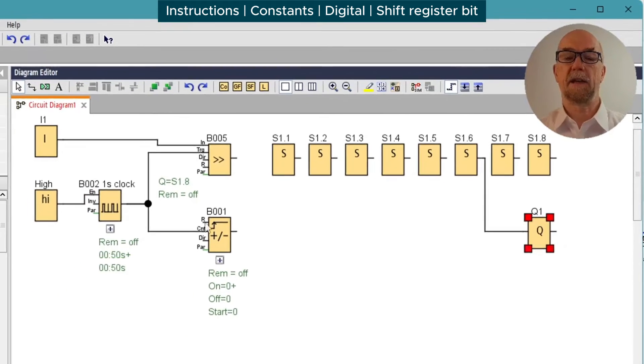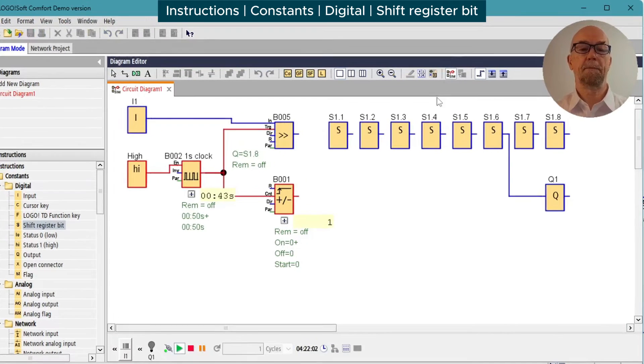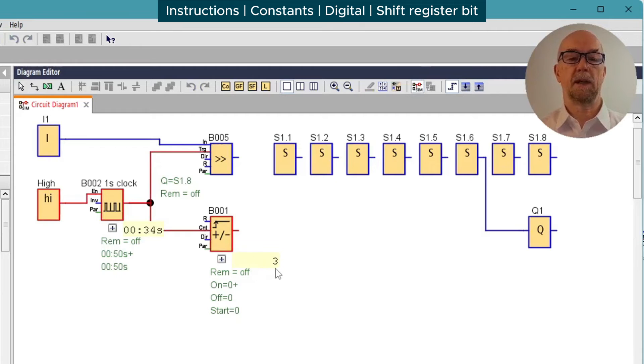I've added a counter so we can keep track of the pulses from the simulated indexer. I'm showing all eight bits from the shift register for the demonstration, but in practice we'd only need the sixth bit. So we'll switch on the simulation and we can see our machine is indexing away here: five, six, seven.